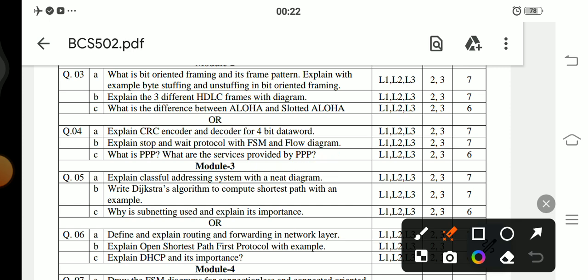From Module 3, question number 5 goes like this: 5a: Explain the classful addressing system with a neat diagram. Question 5b: Write Dijkstra's algorithm to compute the shortest path with an example. 5c: Why is subnetting used and explain its importance.